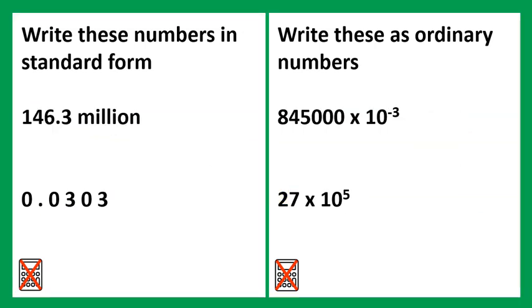On to the advanced questions. These are some of the trickiest types of questions that you're likely to find on this topic. Firstly, we have the number written as 146.3 million. Write down what this number would look like as an ordinary number first.